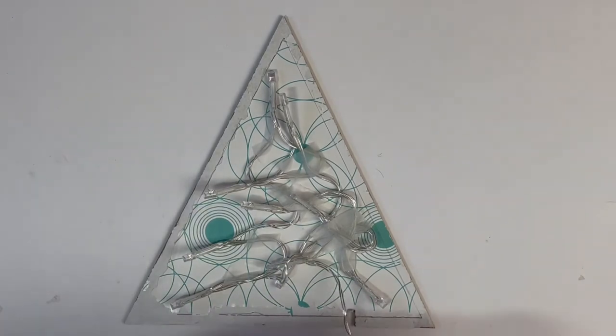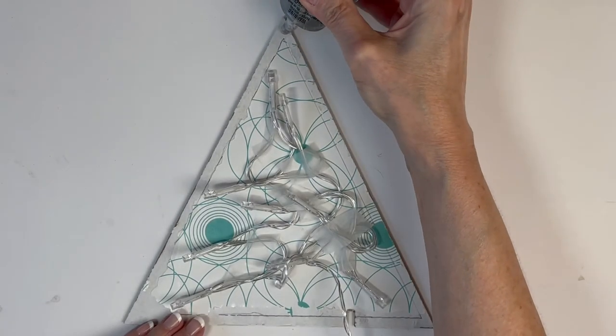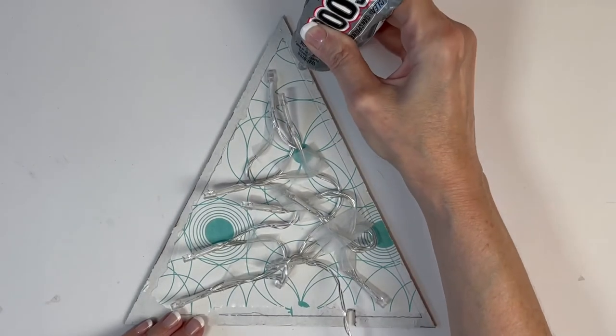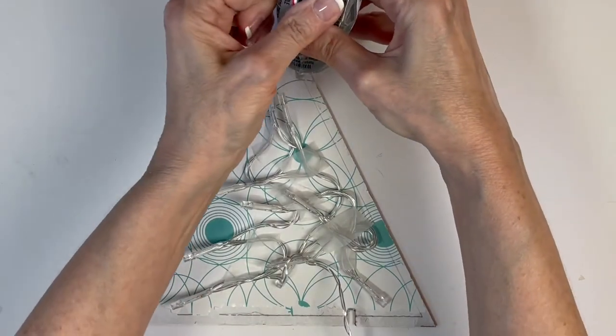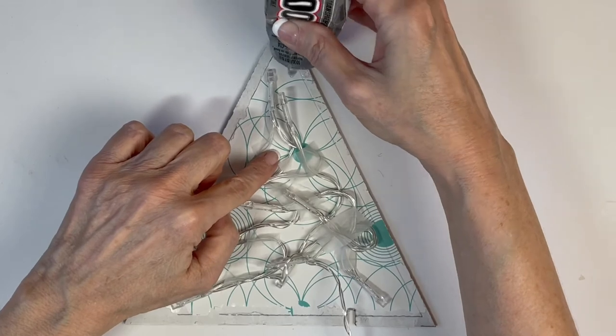Now we're ready to attach the frame with glue. I'm using E6000. I wanted to use a glue that was strong, yet gave me a little bit of time to work with it. Hot glue gun dries too fast and it can burn off your fingerprints.